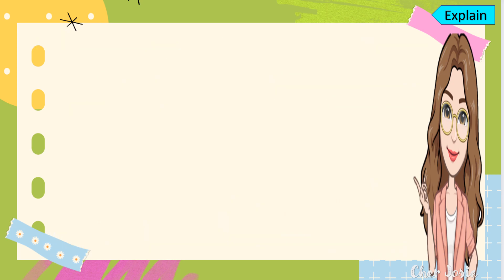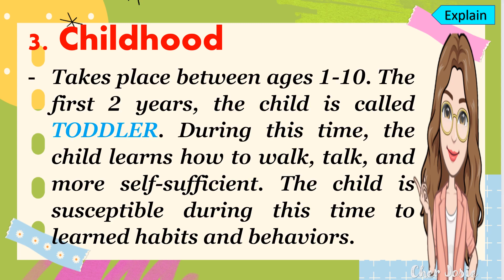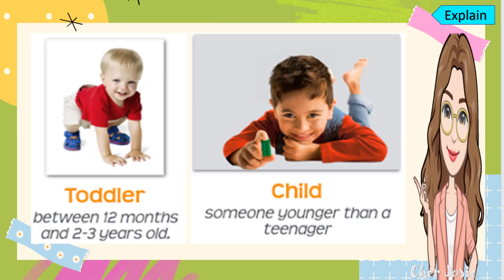The third stage is childhood, which takes place between ages 1 to 10. The first 2 years of the child is called the toddler stage. During this time, the child learns how to walk, talk, and become more self-sufficient. The child is susceptible during this time to learn habits and behaviors. The other picture shows what we call the child — someone younger than a teenager.